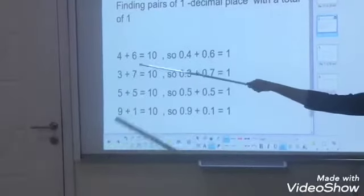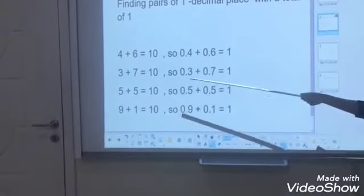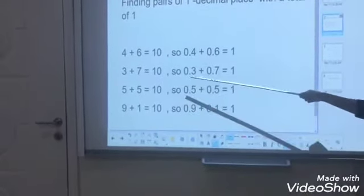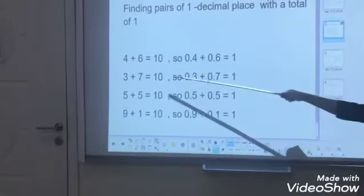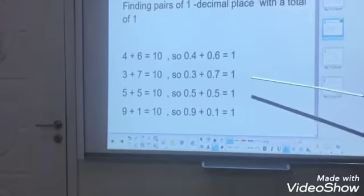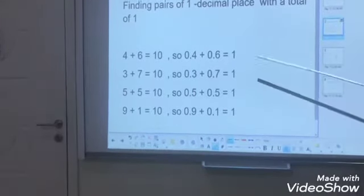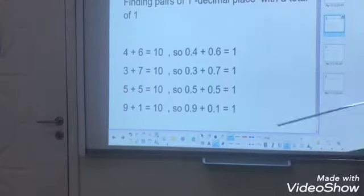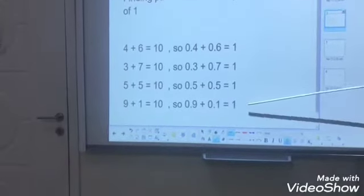3 plus 7 - already I said 3 plus 7 equals 10. How to write in decimal? You can take 3 as 0.3 and 7 as 0.7. After adding, you will get 1. You can see 2 more pairs are there that equal 1.